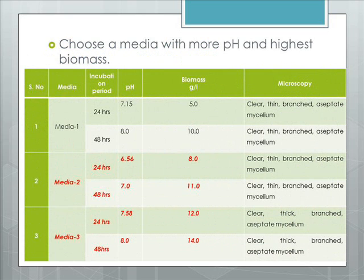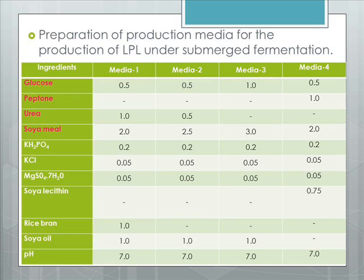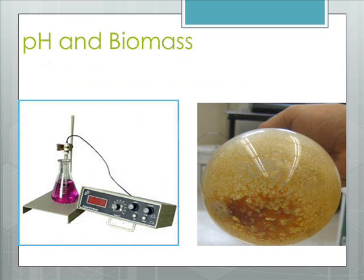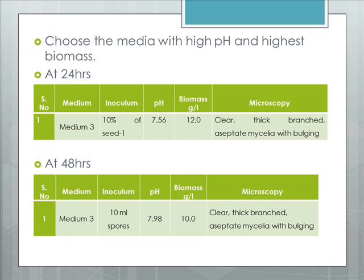Similar to the seed stage, here we use four different medias of different carbon and nitrogen sources in varied amounts for the production media, which is again incubated for 96 hours, whose pH and biomass is checked and weighed respectively. The media with high pH and biomass is opted for the solvent precipitation.